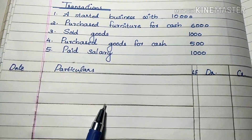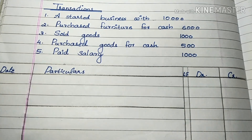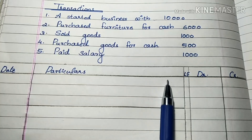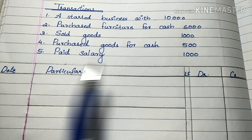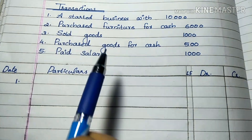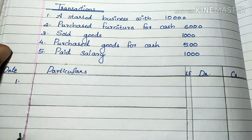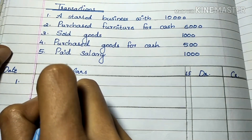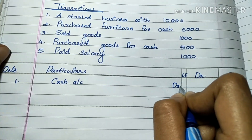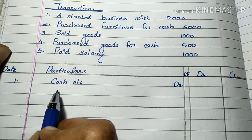The journal format is: Date, Particulars, LF, Debit, Credit. This is the format we have to use in the exam. We write the date, the account names, and the debit and credit amounts accordingly.